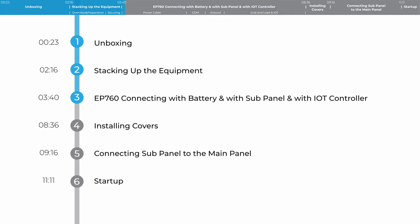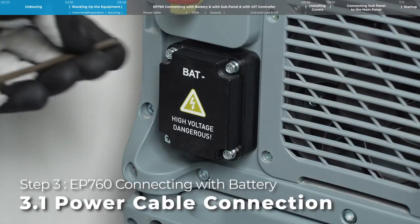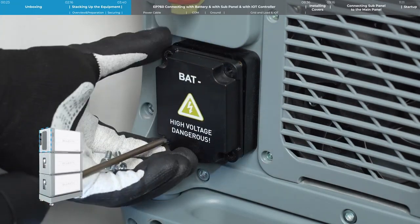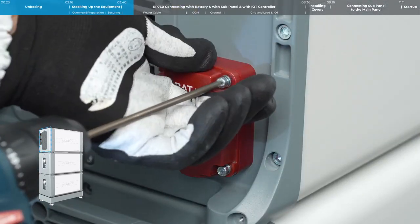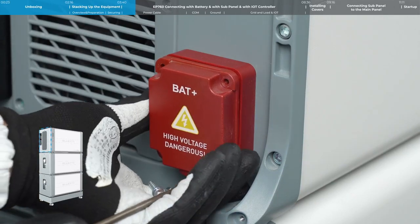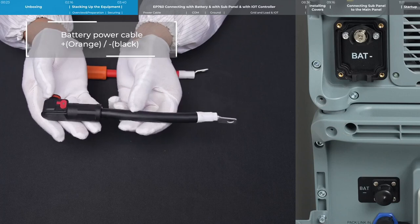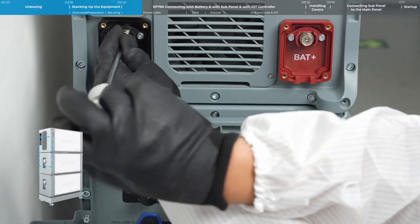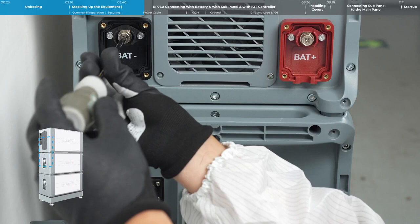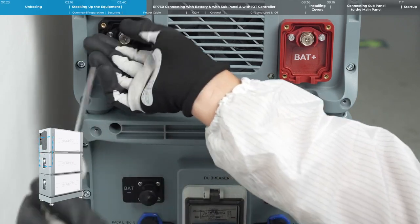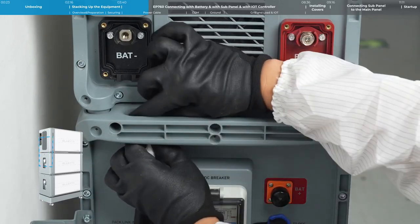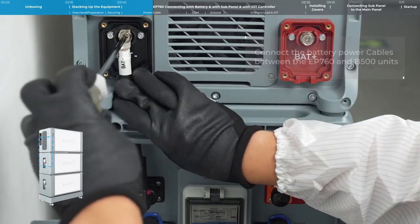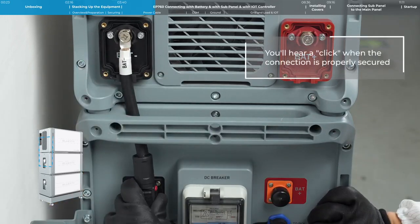Step 3: Connecting with battery with sub panel with IoT controller. Remove the protection covers from the positive and negative terminals on the left side of the EP760. Remember the EP760 power cable has a quick release structure on one end only.